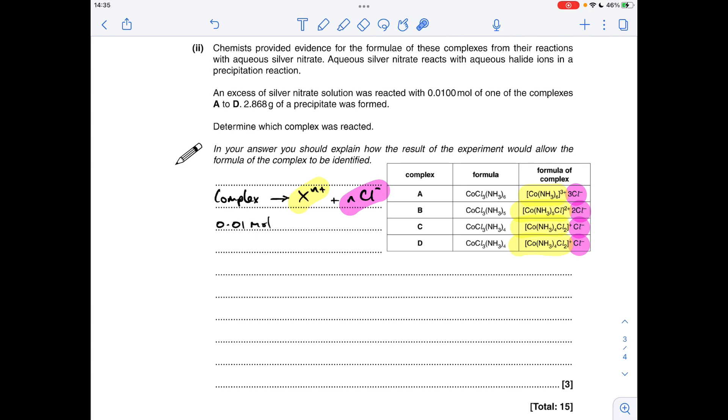So we're told that 0.01 moles of one of the complexes is reacted with an excess of silver nitrate solution and 2.868 grams of a precipitate is formed. So what's happening is the silver ions from the silver nitrate solution are reacting with the chloride ions that the complex has released and forming silver chloride. So the first thing we can do is work out, well, how many moles of silver chloride have formed? So there's just a reminder of the ionic equation for the formation of the silver chloride precipitate.